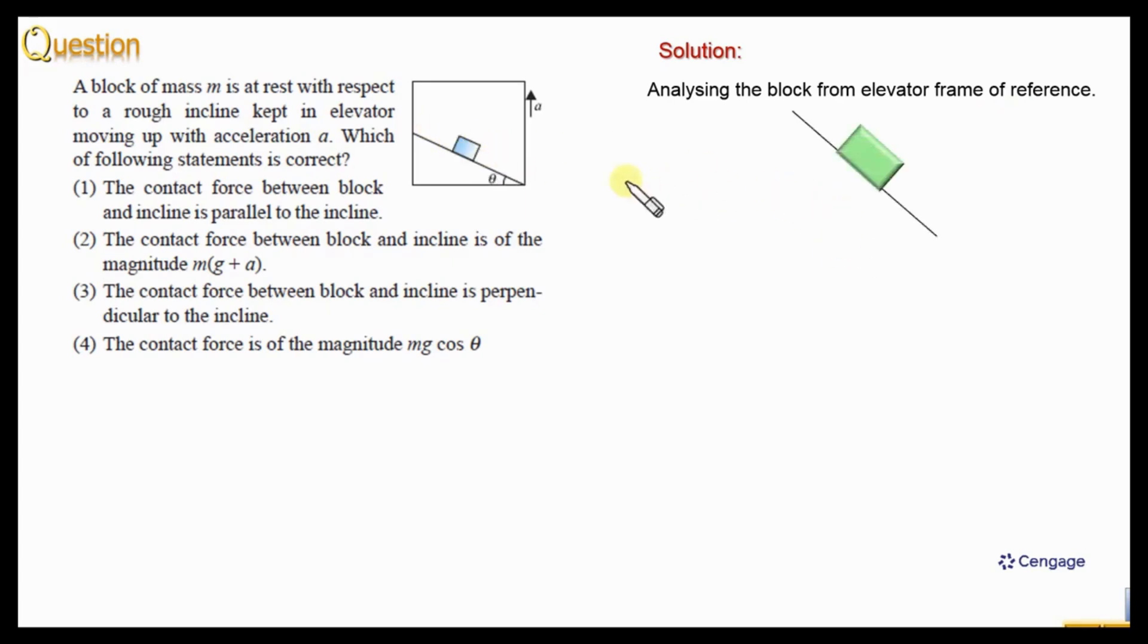Let us make the free body diagram of the block with respect to elevator frame of reference. The pseudo force on the block will act in the vertical downward direction opposite to the acceleration of the elevator. So this is mass multiplied by acceleration, and weight of the object will also act in the downward direction, vertical downward direction. This is mg. We can combine these two forces: mg plus a.